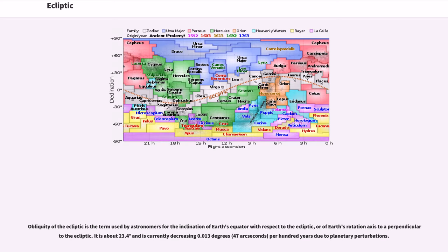Obliquity of the ecliptic is the term used by astronomers for the inclination of Earth's equator with respect to the ecliptic, or of Earth's rotation axis to a perpendicular to the ecliptic. It is about 23.4 degrees and is currently decreasing 0.013 degrees, 47 arcseconds per 100 years due to planetary perturbations.